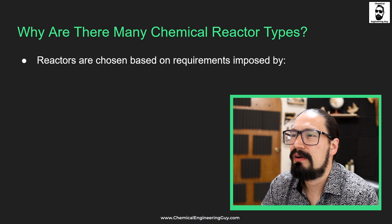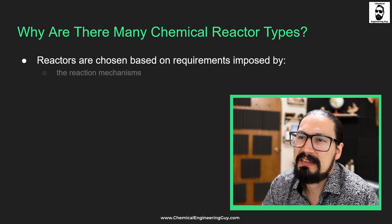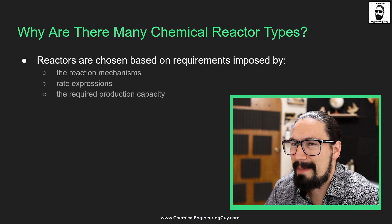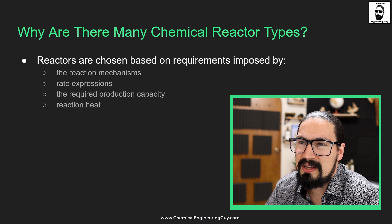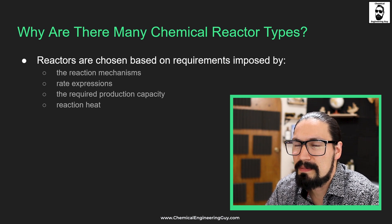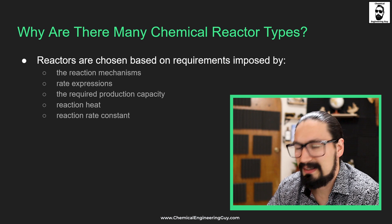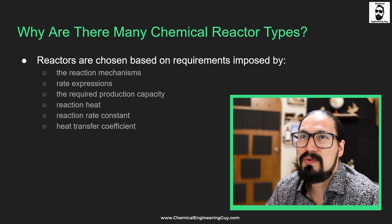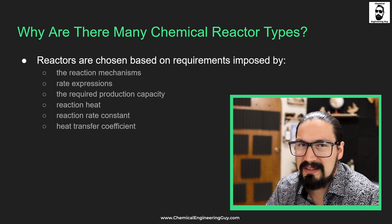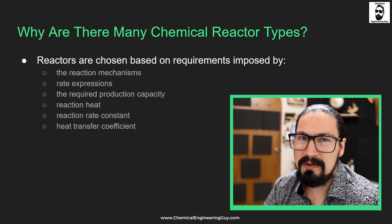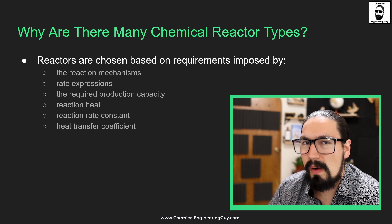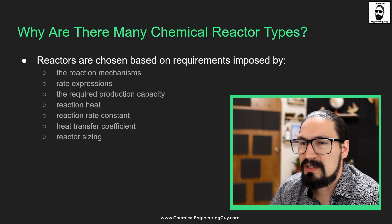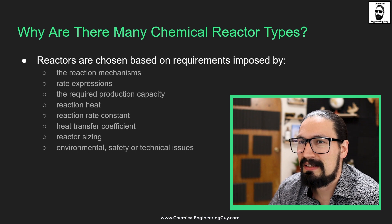Reactors are chosen based on requirements imposed by reaction mechanisms, rate expressions, required production capacity, reaction heat — how much energy is released or absorbed — and the reaction rate constant, meaning how quickly or slowly the reaction occurs. Heat transfer coefficients matter too; if reactants don't follow the rate of heating, problems arise. Reactor sizing is definitely worth checking out, along with environmental, safety, and technical issues.